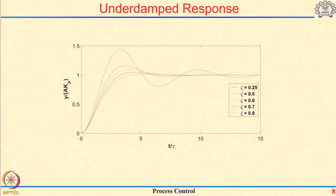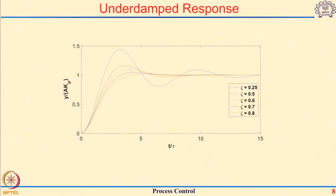That is how the responses of a second order system change as we change the damping coefficient from a very high value to a value close to 0. The underdamped response will play a very important role in control system design. For example, if a controller is trying to move a parameter — say a scaled temperature — from the original steady state to the final steady state value of 1, we want the response to move as quickly as possible.